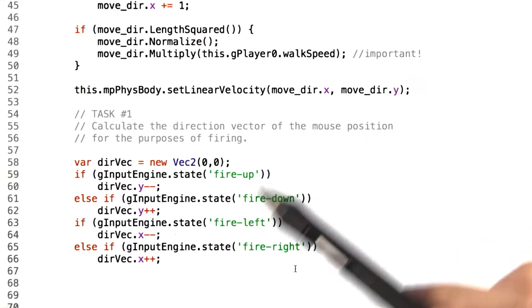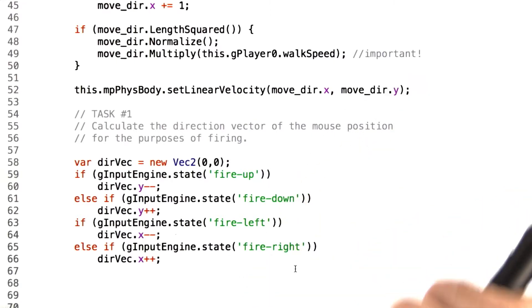So what we need to do is take the actual mouse input and snap it to one of the eight directions that the keyboards actually have access to. In order to do this, we need to do a little bit more trigonometry.